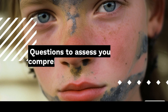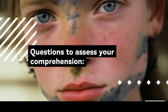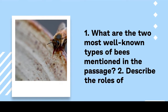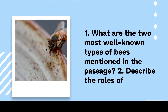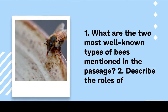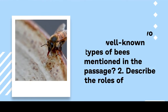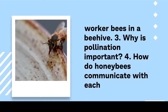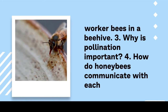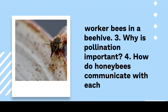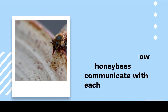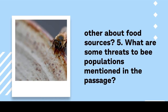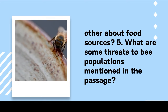To assess your comprehension: 1. What are the two most well-known types of bees mentioned in the passage? 2. Describe the roles of worker bees in a beehive. 3. Why is pollination important? 4. How do honeybees communicate with each other about food sources? 5. What are some threats to bee populations mentioned in the passage?